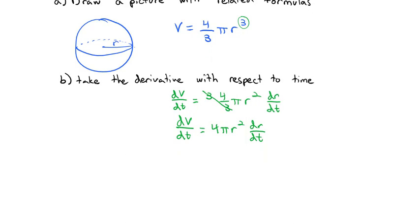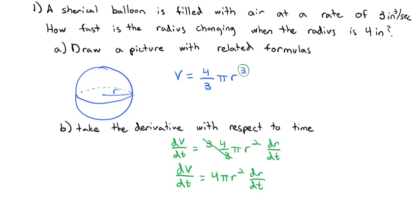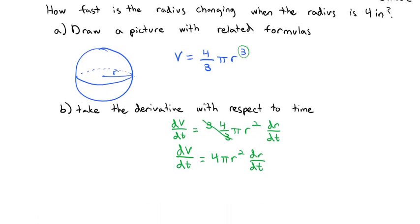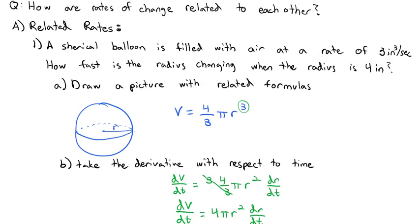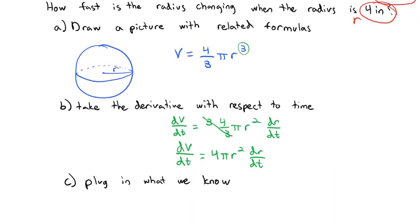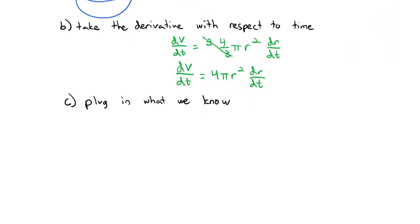Now that we have our derivative with respect to time, let's plug in what we know. The volume is increasing at a rate of 3 cubic inches per second — that is the change in volume with respect to time. We also know that the radius is currently 4 inches at this moment. So dv/dt equals 3, which equals 4π times r equals 4 inches, squared, times dr/dt.